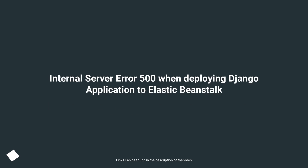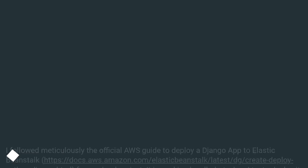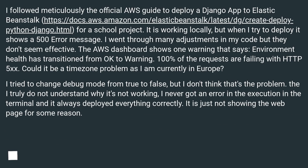Internal server error 500 when deploying a Django application to Elastic Beanstalk. I followed meticulously the official AWS guide to deploy the Django app to Elastic Beanstalk for a school project. It is working locally, but when I try to deploy it shows a 500 error message. I went through many adjustments in my code but they don't seem effective.